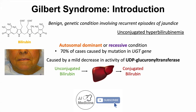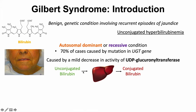Briefly, unconjugated bilirubin is a breakdown product of hemoglobin. Hemoglobin breakdown leads to unconjugated bilirubin, which then goes to the liver and becomes conjugated — converted to conjugated bilirubin — so it can be excreted from the body.